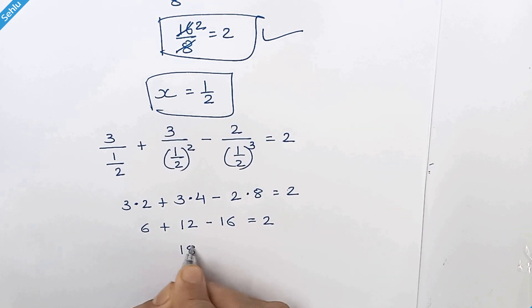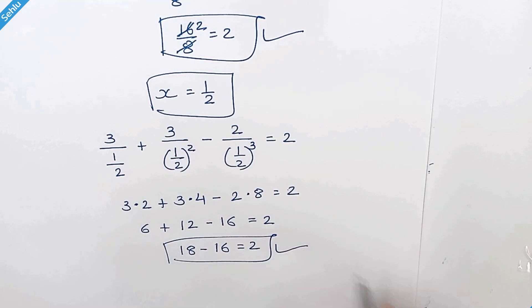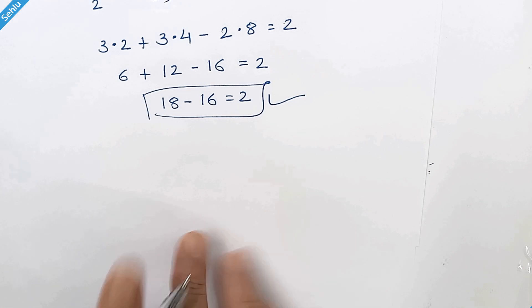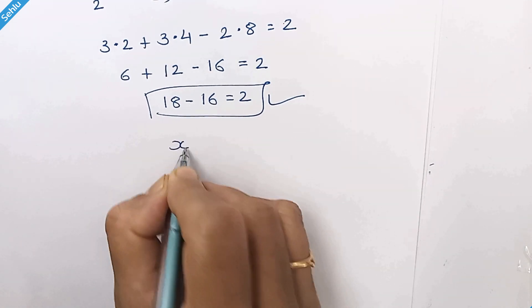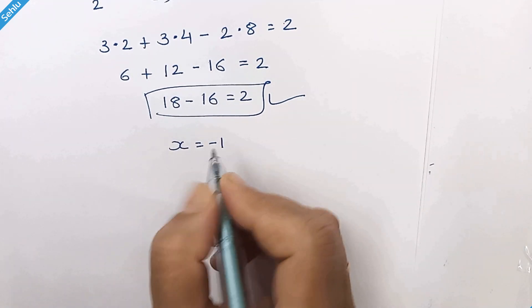6 plus 12 is 18 minus 16 is equal to 2 which is correct.